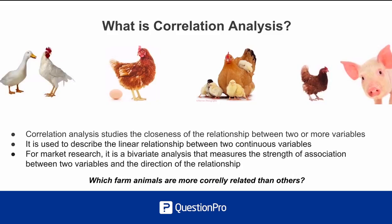So in this case, baby chicks are most correlated to chickens out of all of them. I know this is kind of silly, but it's a great analogy to grasp the basics of the correlation analysis methodology.